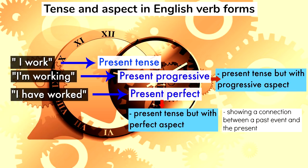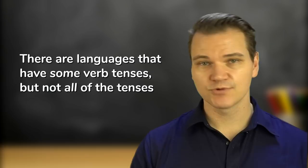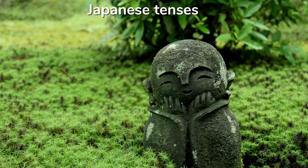There are certain languages that do have tenses, but not all of them. In particular, it's quite common for languages to show no distinction between present tense and future tense. This is the case with Japanese, for example, which has two tenses, past and non-past.